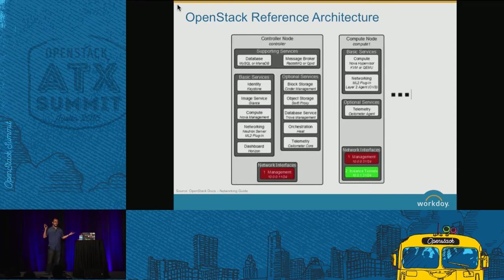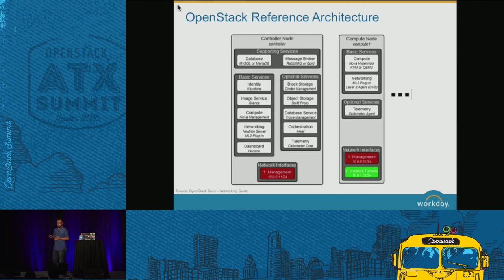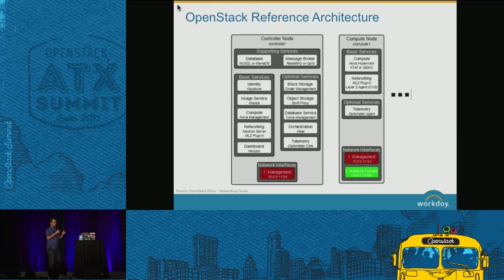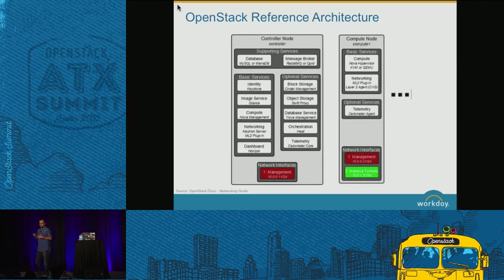We went to the basic documentation and found a nice architecture picture. Basically you need a bunch of projects with GitHub repositories, packages from different distro companies — Red Hat, SUSE, etc. — and options for backend storage like MySQL or MariaDB. You also need a message broker to let all these multiple components communicate with each other, as shown in the previous picture. The message broker is all around — we have RabbitMQ, QPID, all these things.